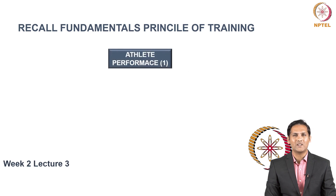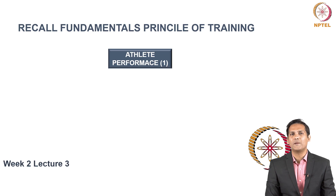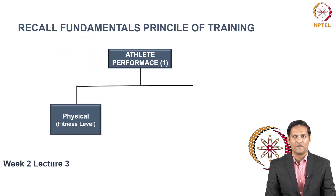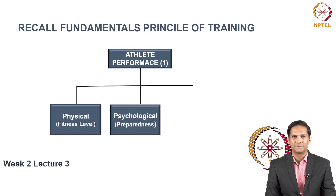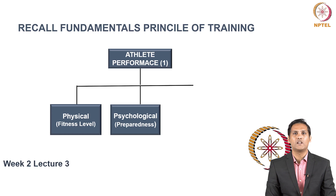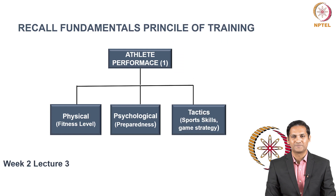Let's begin with understanding what athlete performance means. With respect to the athlete, the only parameter that is important is their performance. There are three pillars of performance: the first is physical capacity, reflected by their fitness level; the second is psychological capacity, reflected by preparedness — the mental readiness to perform best in a given event.